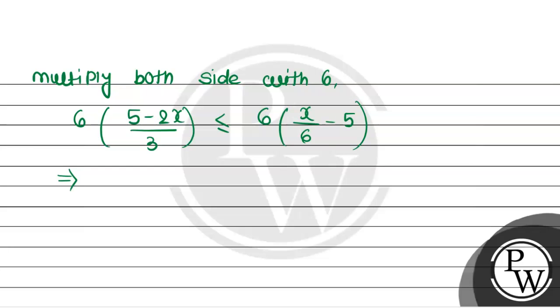Again, simplify the brackets. This gives us 2 times (5 minus 2x) less than or equal to 6x minus 30. Simplifying the bracket further, we get 10 minus 4x less than or equal to x minus 30.